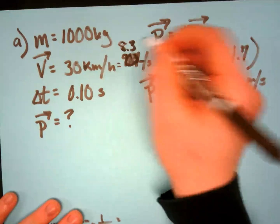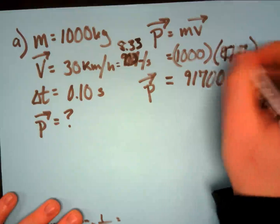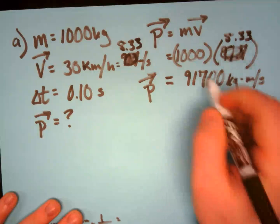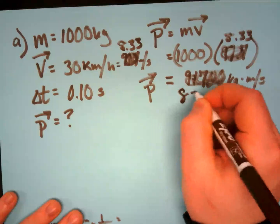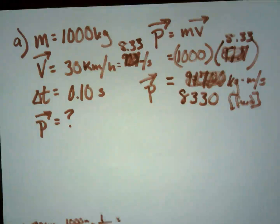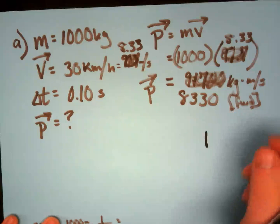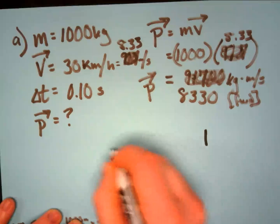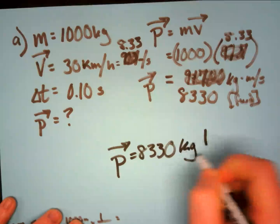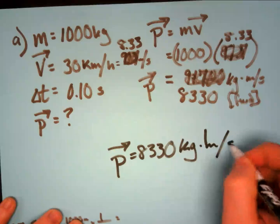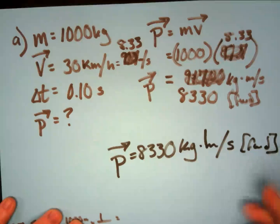My apologies for that earlier error. The correct conversion is 8.33 meters per second, so the answer for part A is 8,330 kilograms times meters per second forward.